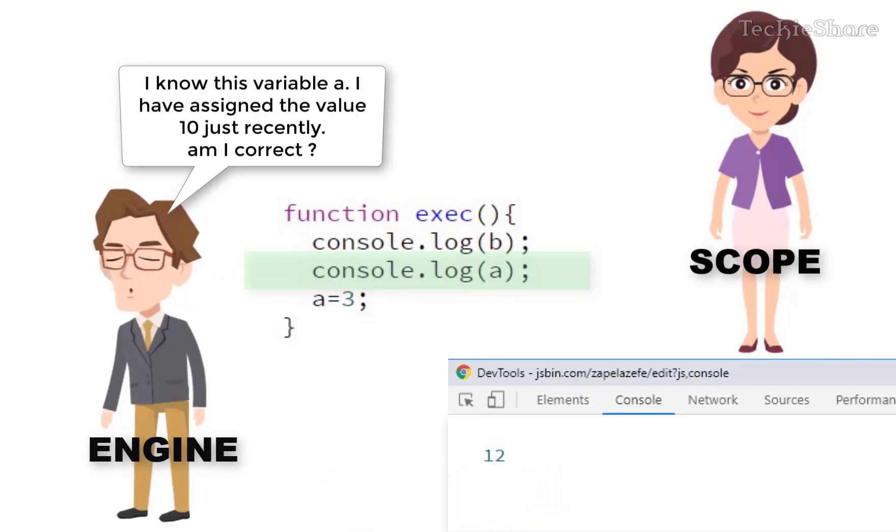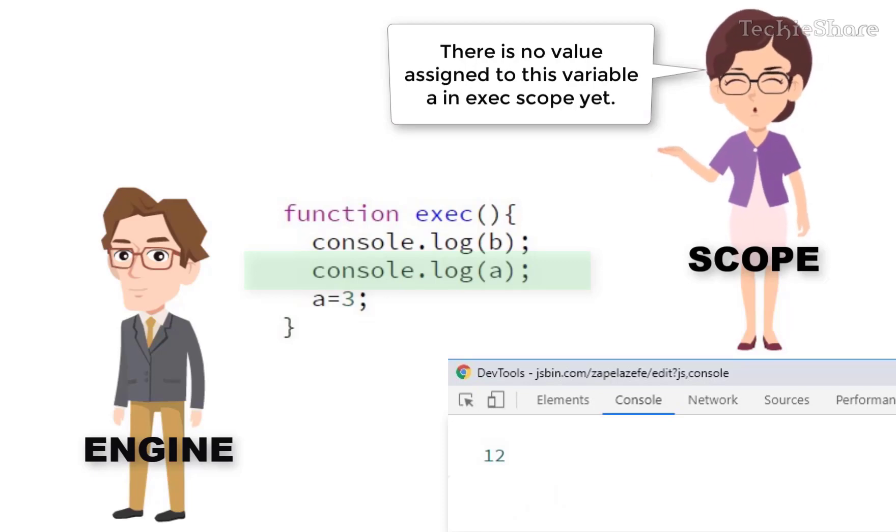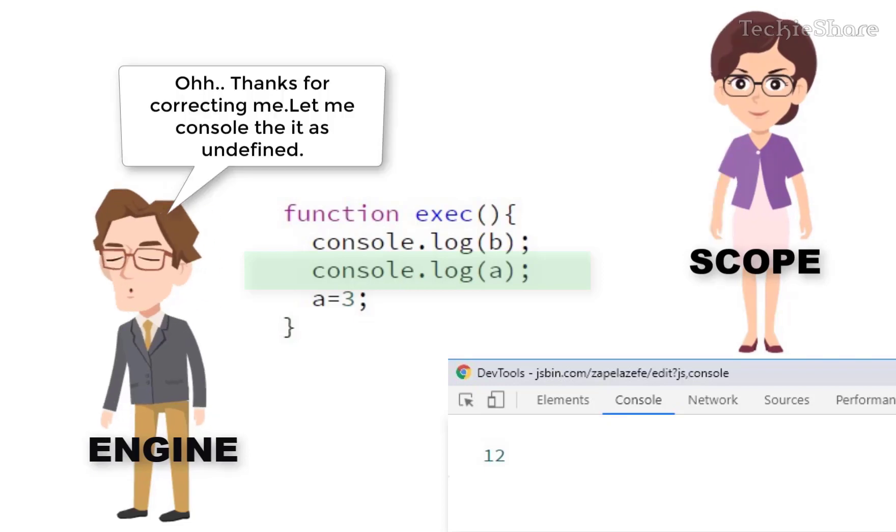I know this variable A. I have assigned the value 10 just before. Am I right? No. Actually Compiler creates this variable in this function scope. And there is no value assigned to this variable yet. Oh. Thanks for correcting me. Let me console the value undefined.